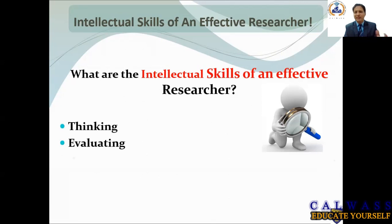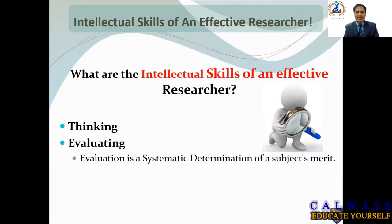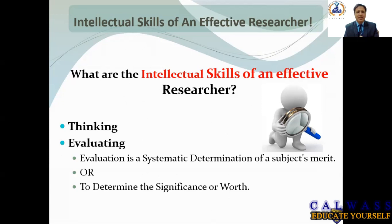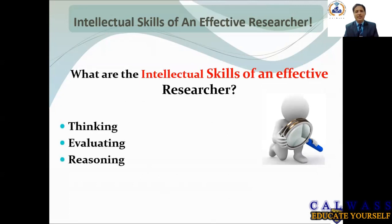Then we do evaluating. Evaluation is a systematic determination of a subject matter — determining its significance. In evaluating, we try to assess what other researchers have done, what their reasons were, what their conclusions were, and we try to understand the significance of their work. This is essentially the literature review, where we understand how a phenomenon has been seen and understood by different researchers and what their viewpoints were.